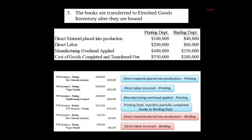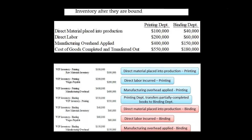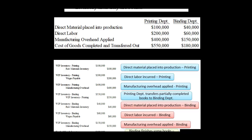When they apply manufacturing overhead in binding — again, this is applied manufacturing overhead, not the actual — that $150,000, we're going to debit work in process inventory for $150,000, and then credit manufacturing overhead. Whenever we apply overhead, we are going to credit the overhead account.